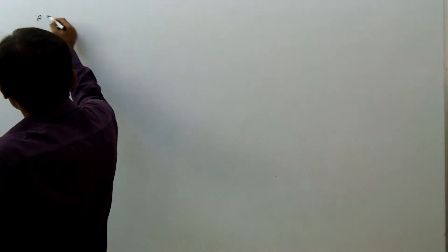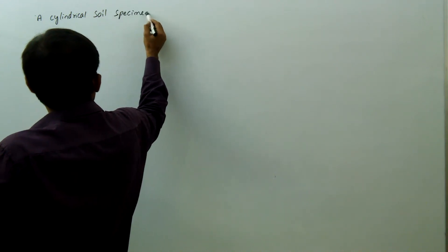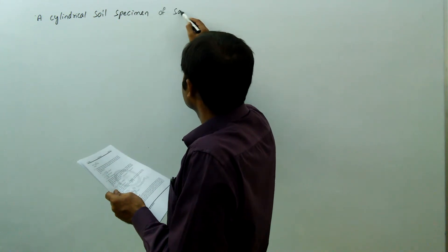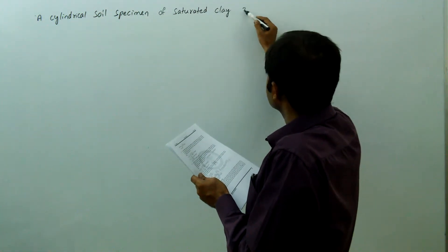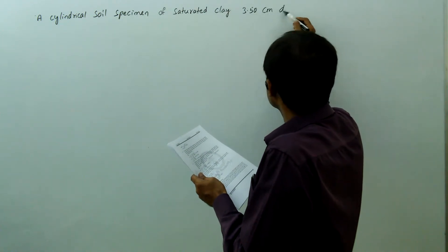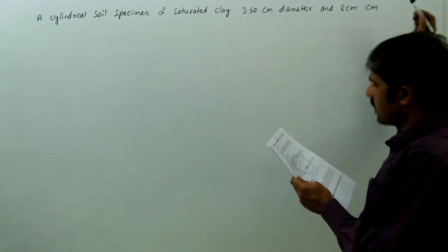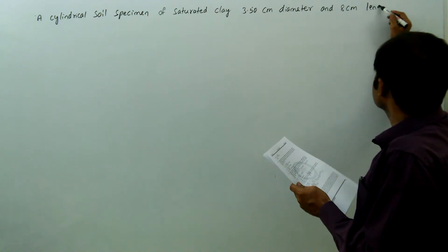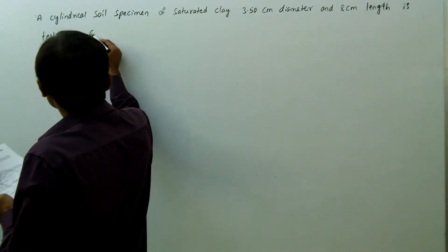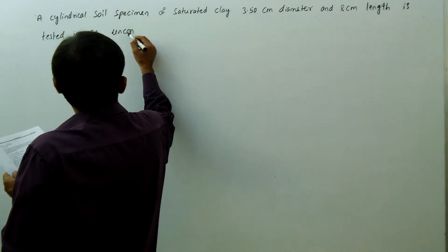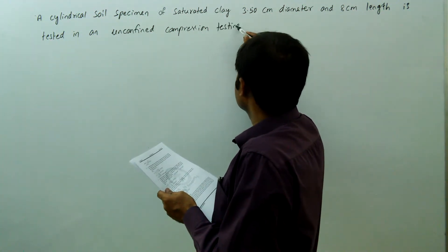A cylindrical soil specimen of saturated clay, 3.5 cm diameter and 8 cm length, is tested in an unconfined compression testing machine.